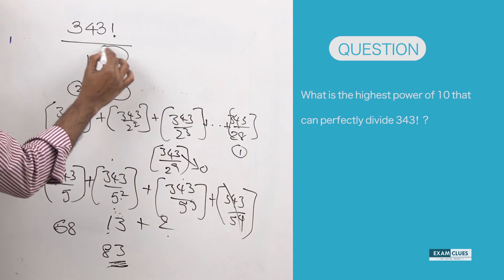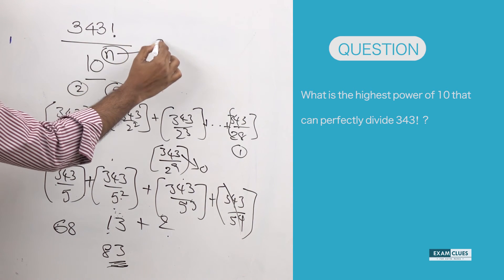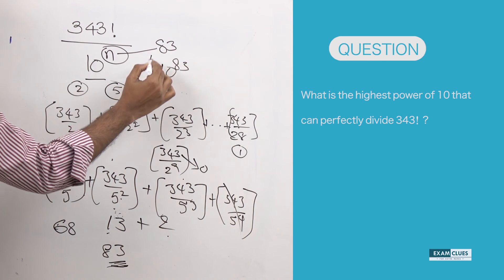So the total number of zeros that exist at the end of 343 factorial is 83 zeros. The highest power of 10 that can divide 343 factorial is 83—that is, 10 to the power 83 can perfectly divide 343 factorial leaving remainder 0.